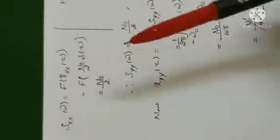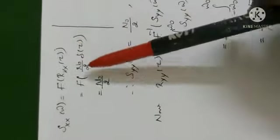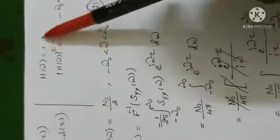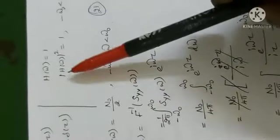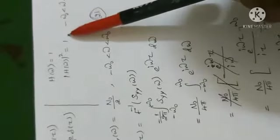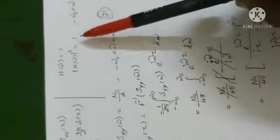Transfer function is given, transfer function whole square. See this is the formula: N0 by 2 constant, Fourier transform of delta of t is 1. This 1 is 1 plus i0. The meaning of mod h of omega square is h of omega into h star of omega, 1 plus i0 into 1 minus i0, which is 1.